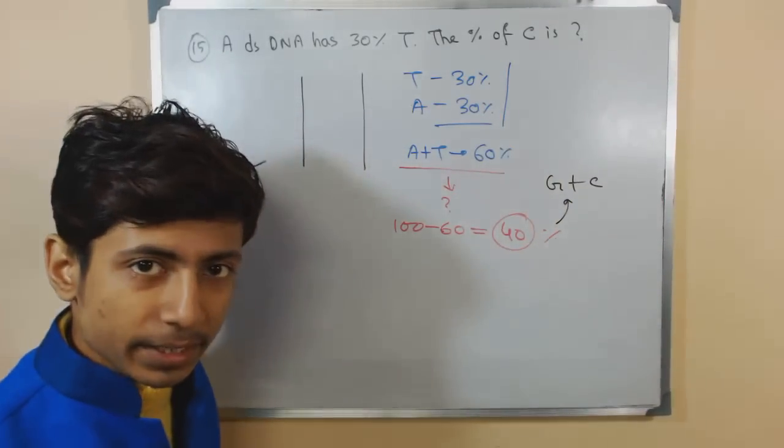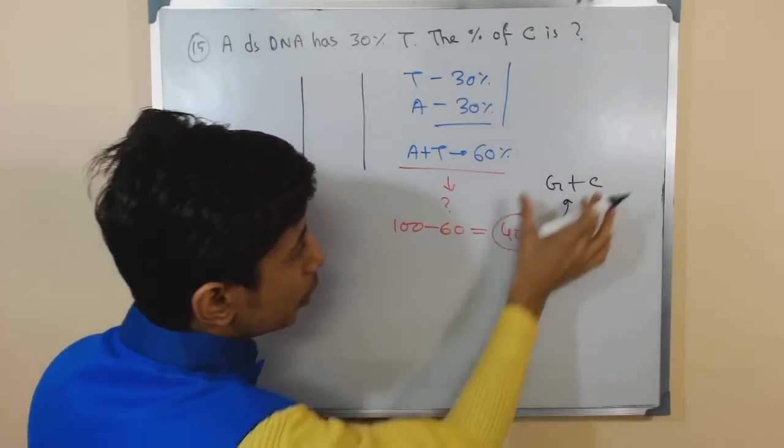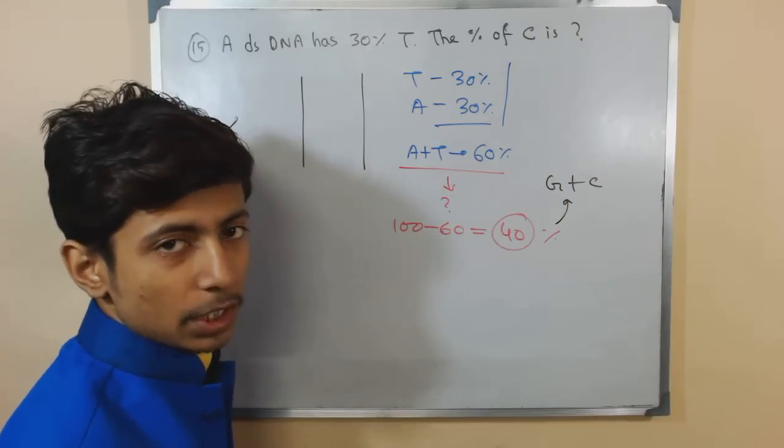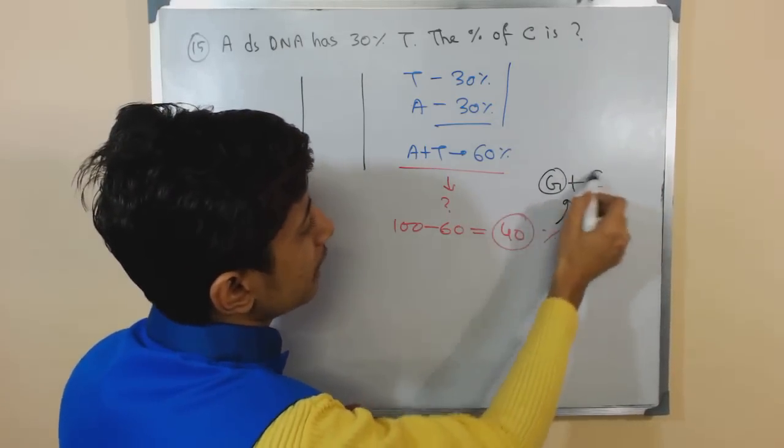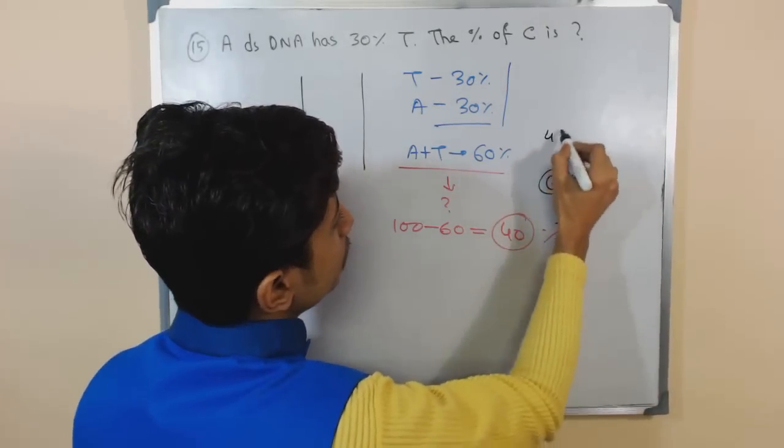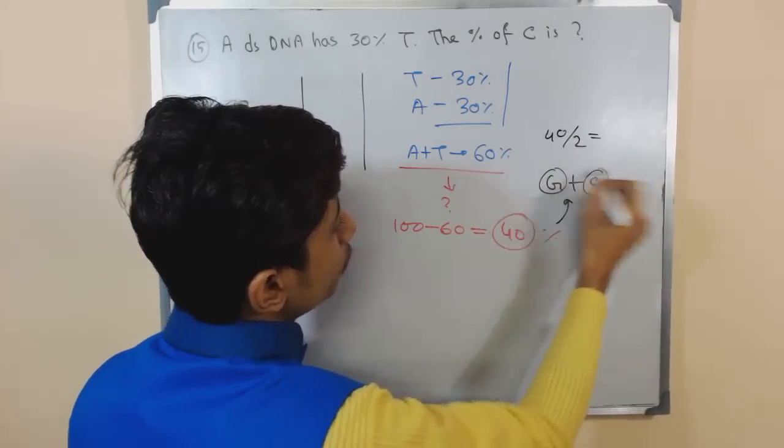If the combined amount of guanine and cytosine is 40 percent, what will be the amount of guanine and cytosine each? Definitely similar amounts, so we need to divide 40 by 2 because there are 2 bases.